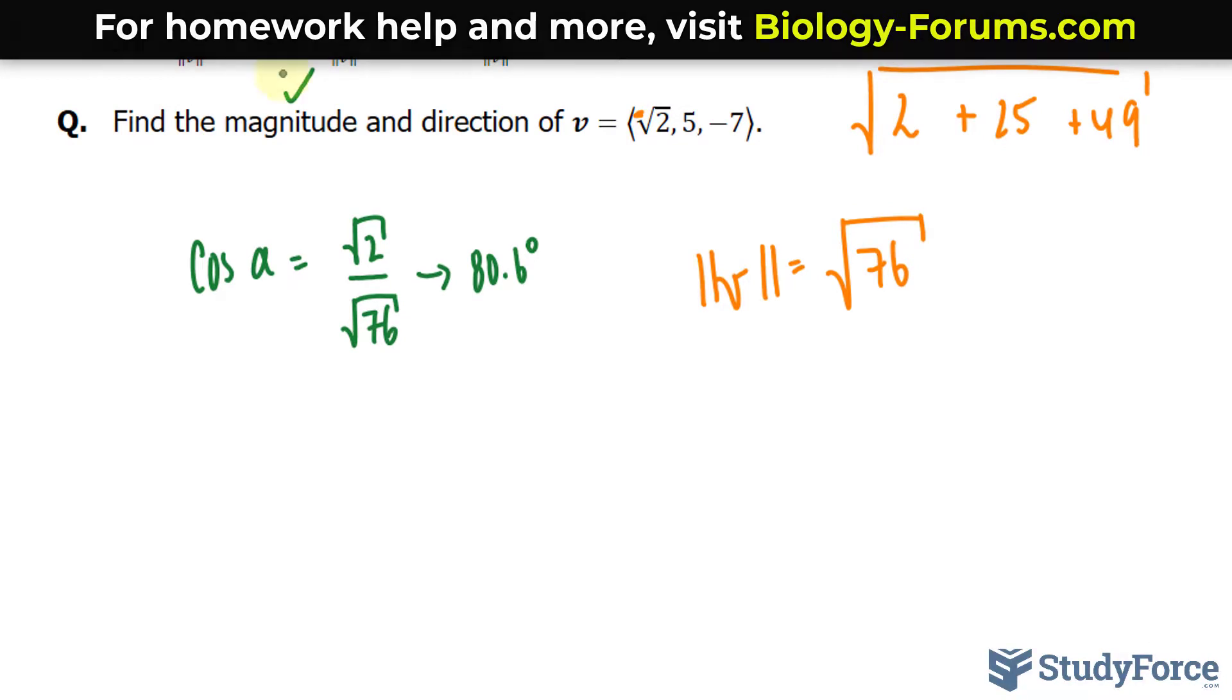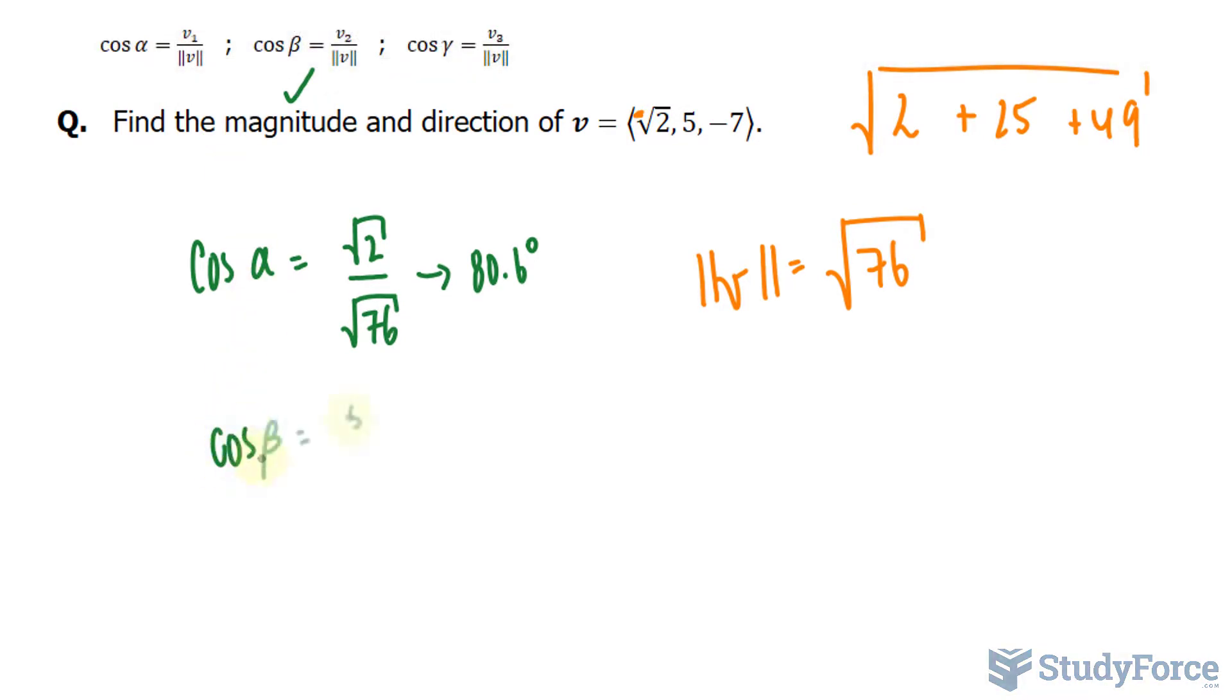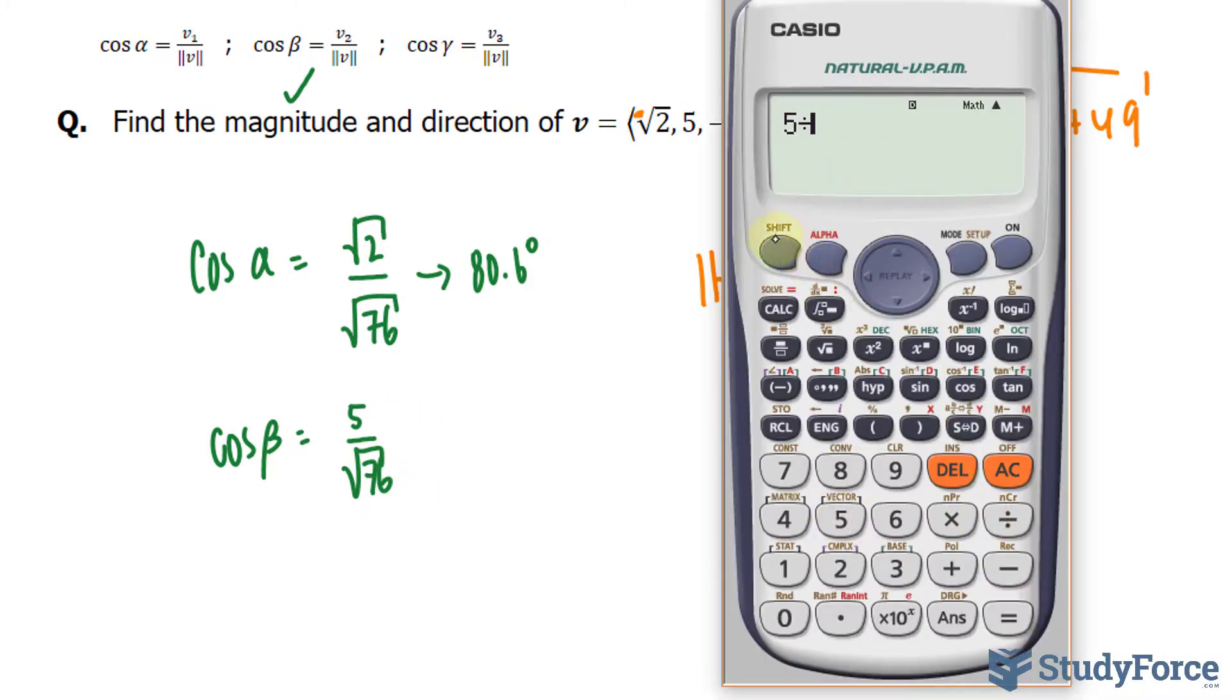Let's do the same thing, but for cosine beta. 5 over the square root of 76. 5 divided by the square root of 76 is equal to that. And now we take cosine inverse of that number, 55 degrees.